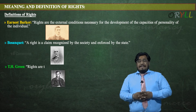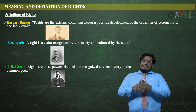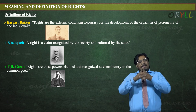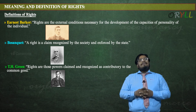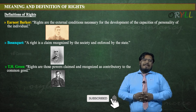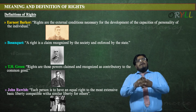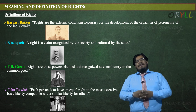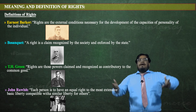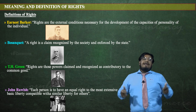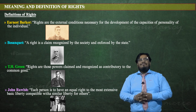T.H. Green defined rights as: 'Rights are those powers claimed and recognized as contributory to common good' — these are powers in the hands of individuals that contribute to the common good of the state. John Rawls defined rights as: 'Each person is to have an equal right to the most extensive basic liberty compatible with the similarity of liberty for others' — meaning everyone in a society should have equal rights and equal freedom.